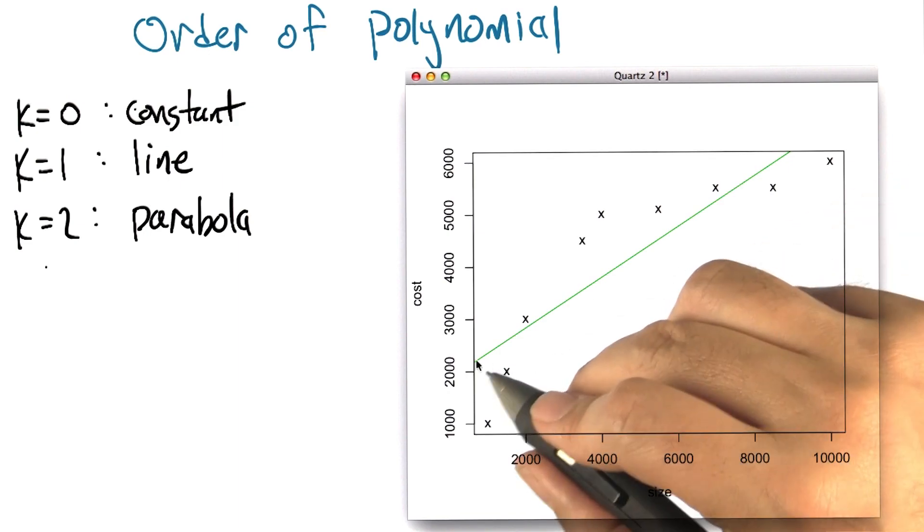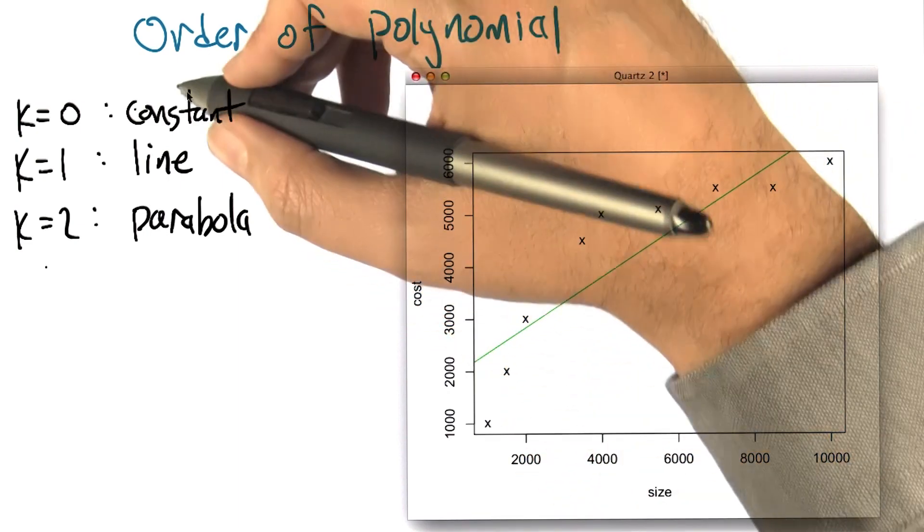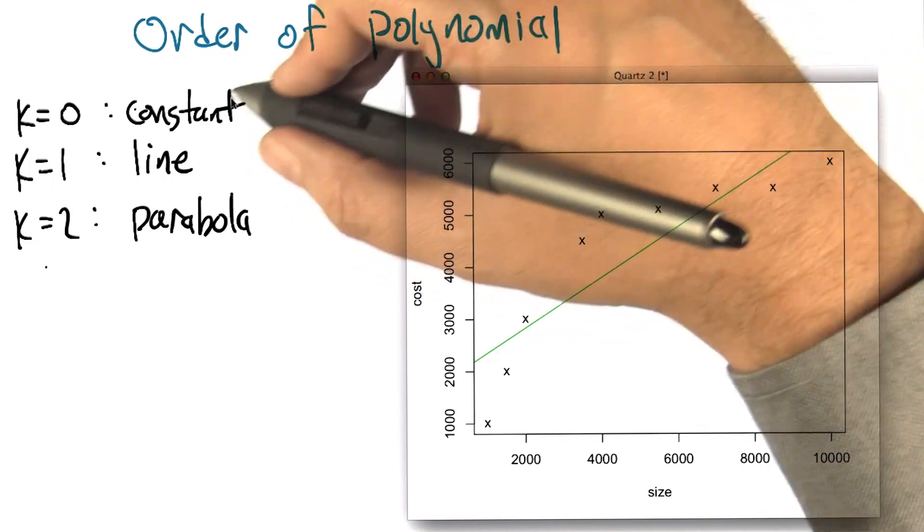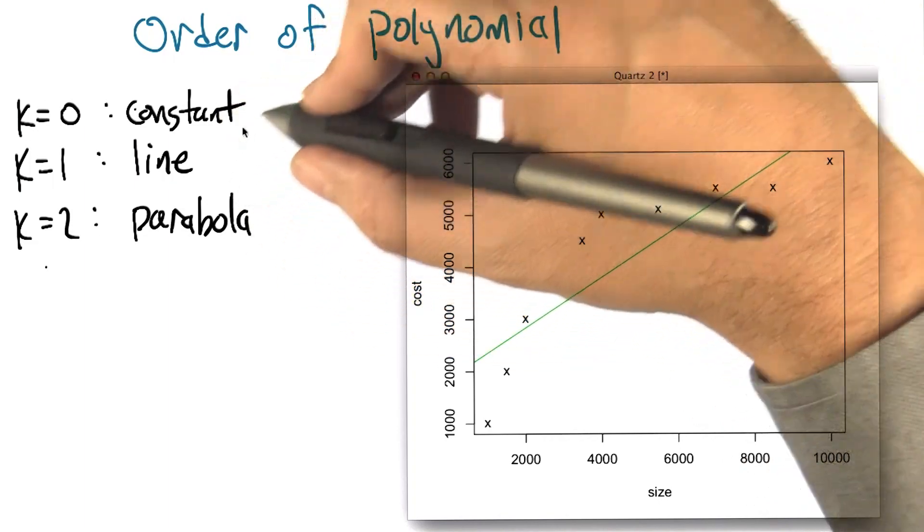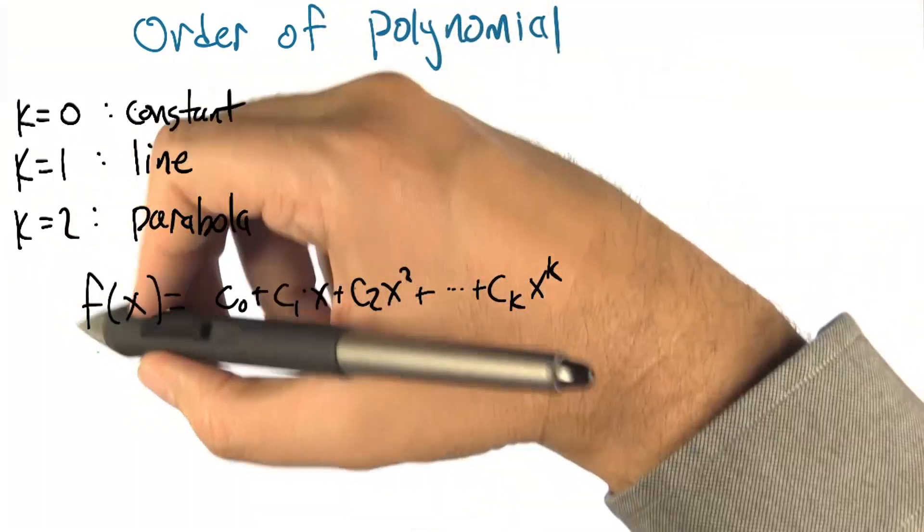One thing we could do is find the best line, but we also talked about finding the best constant. Turns out these all belong to a family of functions that we could fit, which are functions of this form.